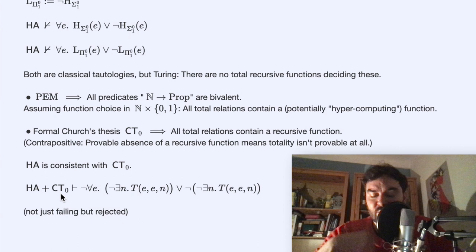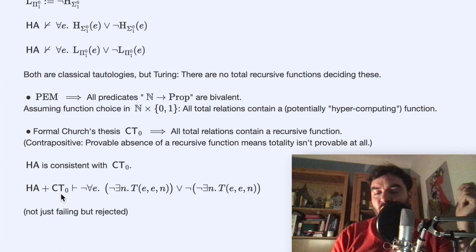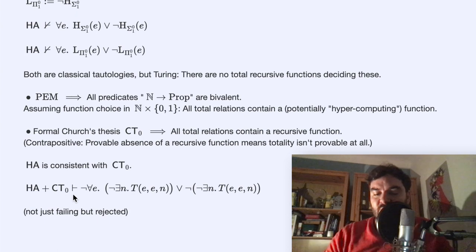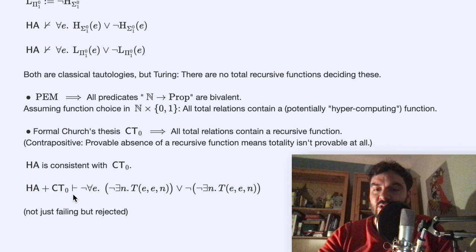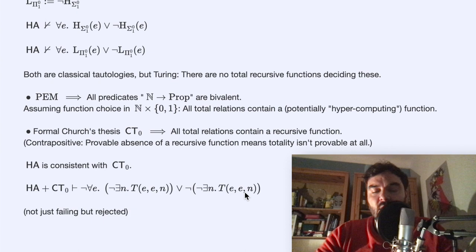If you adopt formal Church's thesis — restricting the world so that everything is computable — then the classical 'function' that takes a program and returns 0 or 1 based on whether it halts on its own input, which we know cannot be Turing computed, is not a function at all. This hypercomputable object cannot exist, and so this theory with the extra assumption explicitly proves a form of weak excluded middle. I hope you learned something. For more, let me know in the comments — there is a lot more to say. I'm glad I stayed under half an hour, so take care.